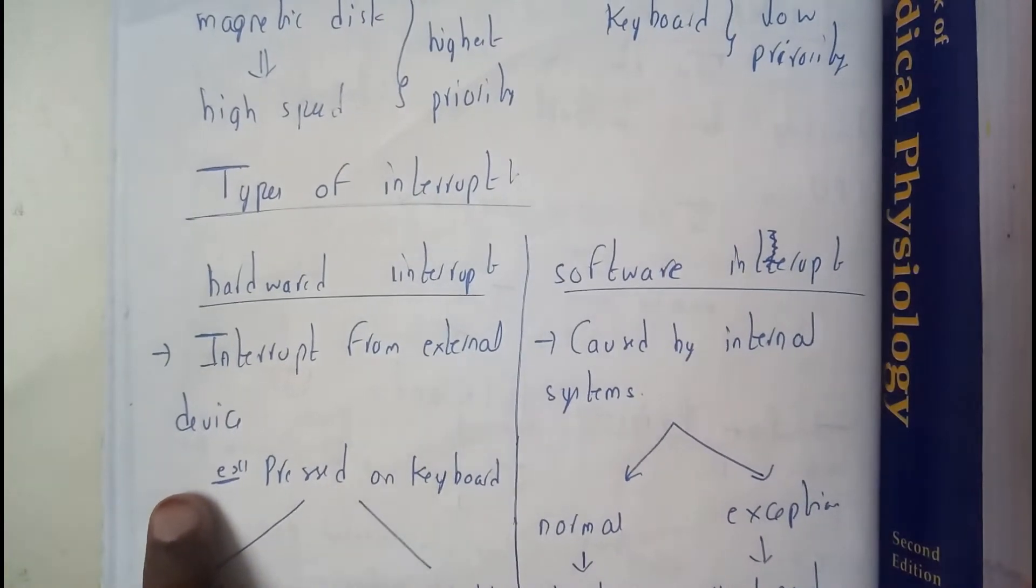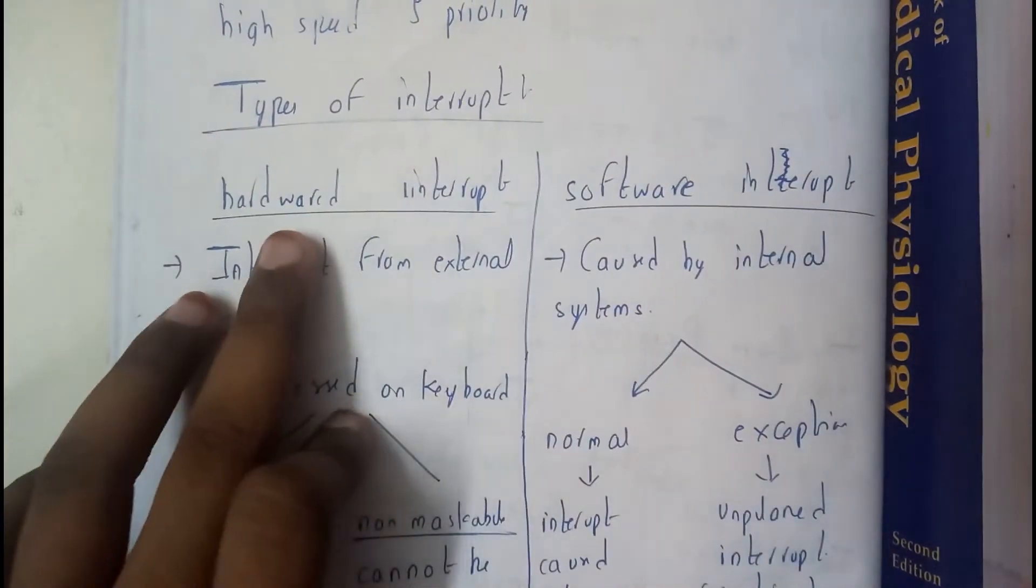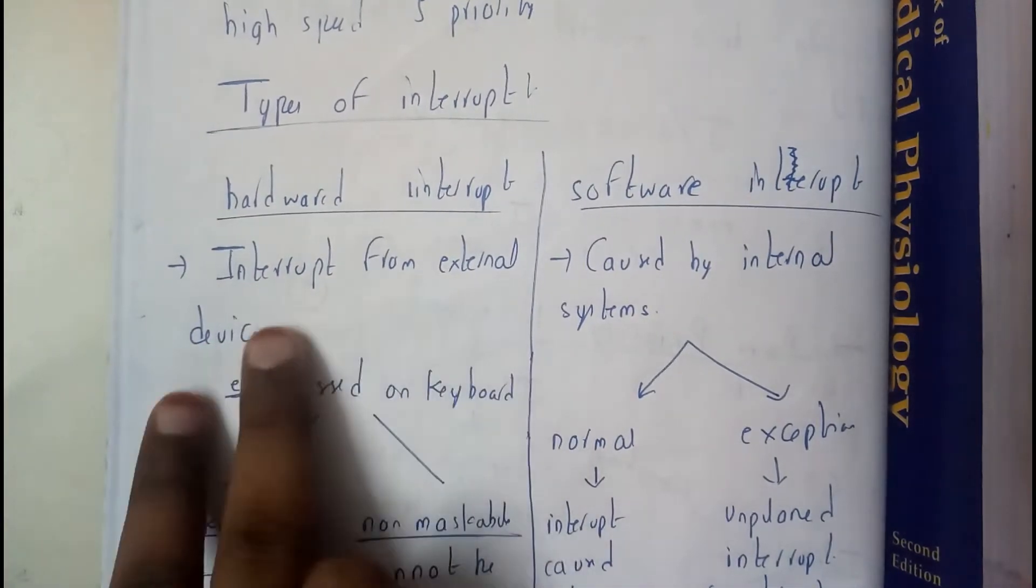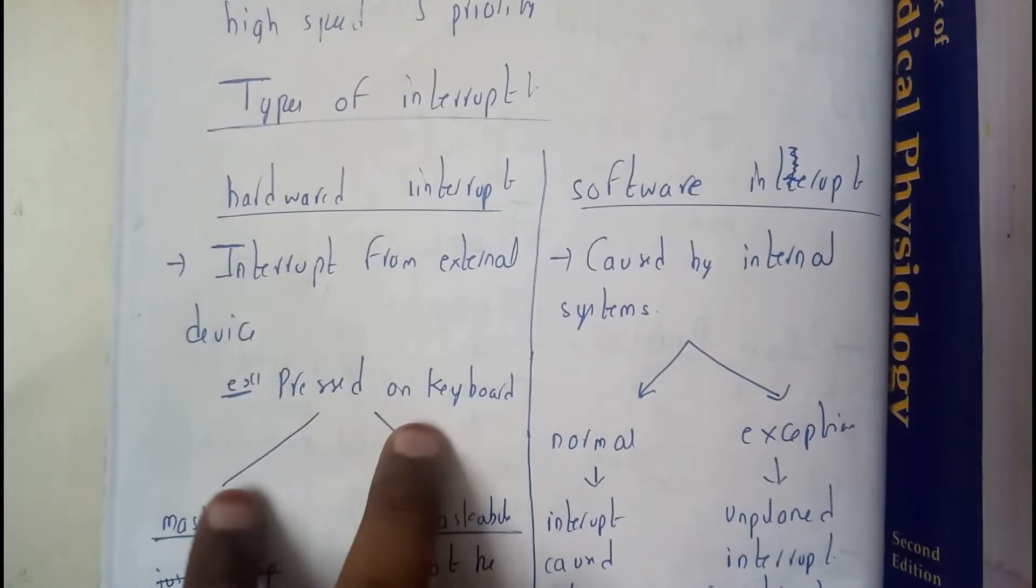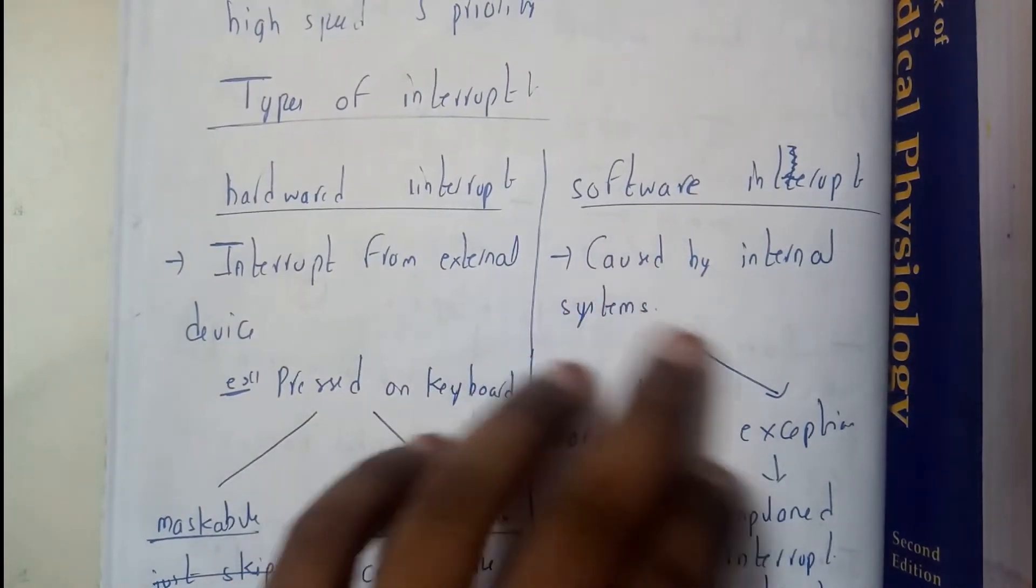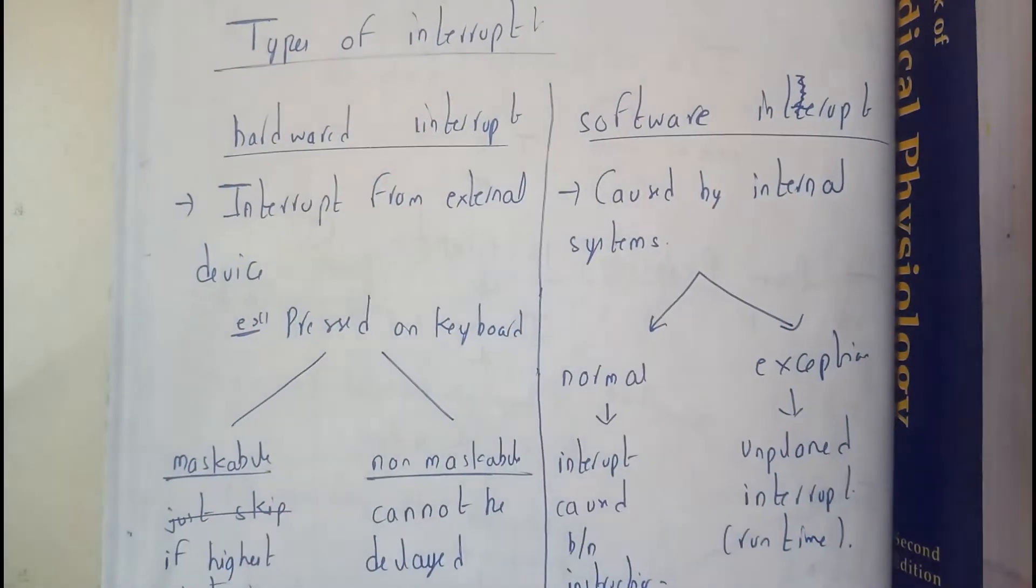Interrupts are further divided into two types: hardware interrupts and software interrupts. Hardware interrupts are from external devices like keyboard or any kind of interrupts. Software interrupts are caused internally by the system.